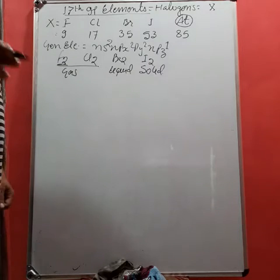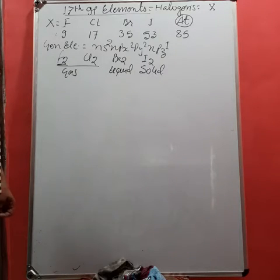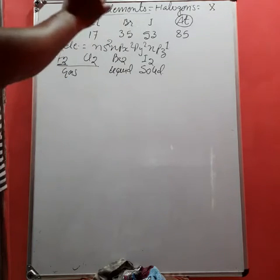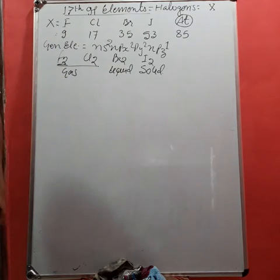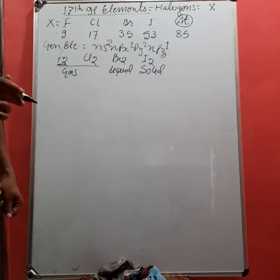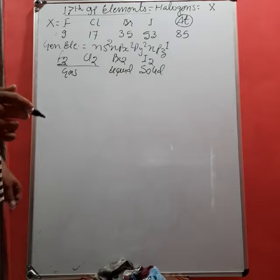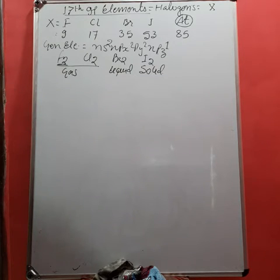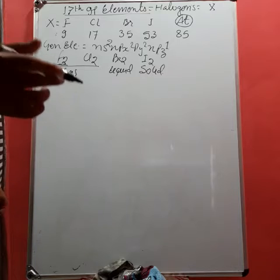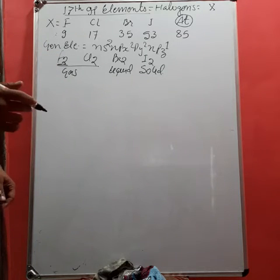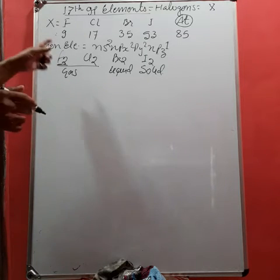Fluorine occurs as fluorospar CaF2, a very important compound used during purification of alumina and metallurgy. Another is Na3AlF6 called cryolite.